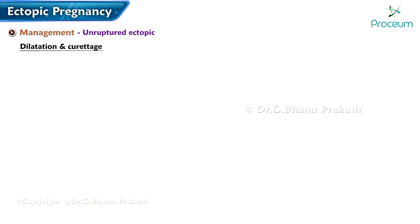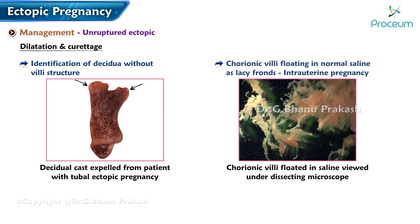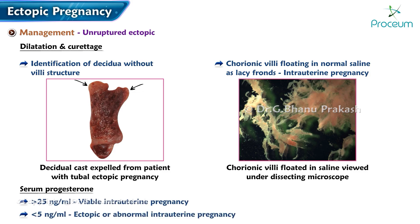Dilatation and curettage: identification of decidua without villous structure is very much suggestive of ectopic pregnancy. Chorionic villi that float in normal saline as lacy fronds are diagnostic of intrauterine pregnancy. Serum progesterone: a level greater than 25 ng/mL is suggestive of viable intrauterine pregnancy, whereas a level less than 5 ng/mL suggests an ectopic or abnormal intrauterine pregnancy.